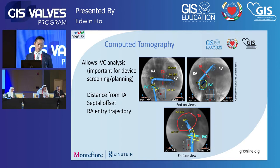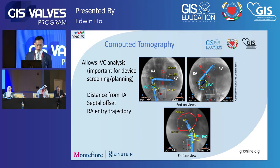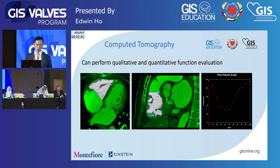Another important component for replacement devices is how the IVC enters the right atrium. The IVC offset from the tricuspid annulus in the anterior-posterior plane can vary, as can the septal and non-septal plane offset. That offset can really change the trajectory of your device as it comes into the right atrium — something we can do a little bit by 3D echo, but IVC visualization is often not as good. CT also allows qualitative and quantitative RV function evaluation, providing another indicator of RV function, especially when we're thinking about eliminating TR with a replacement device.